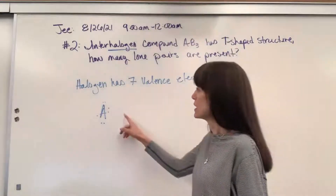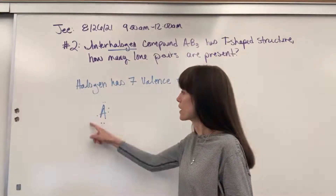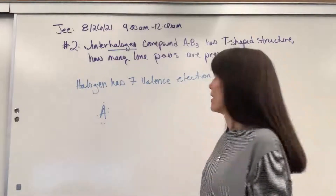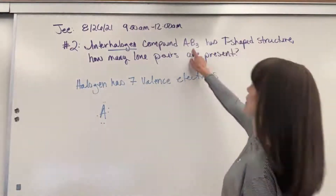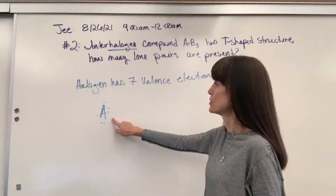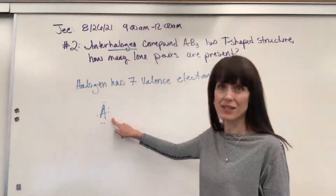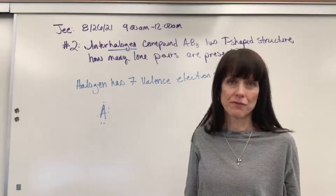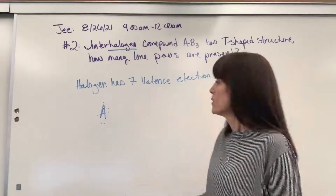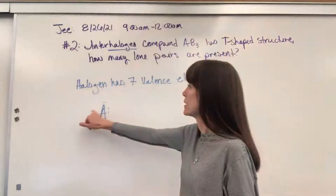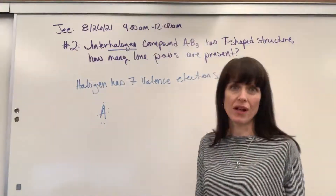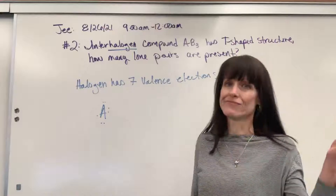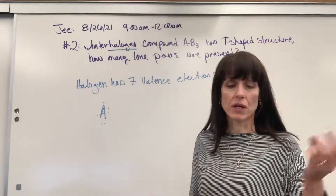Number one, you look to see if you can share electrons to get a full octet. Well, if I have three atoms bonded to this halogen, there's no way that we can do a full octet because it can only accept one electron to get the full octet, not three. So number one, that's not going to work.